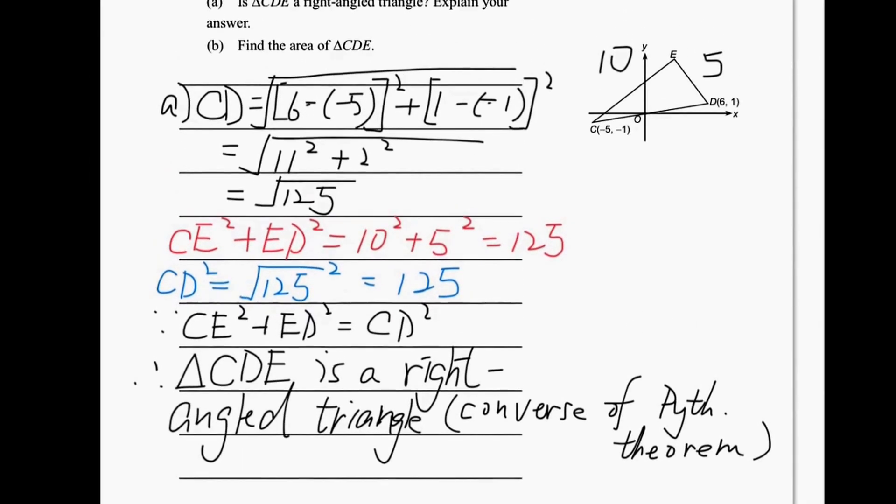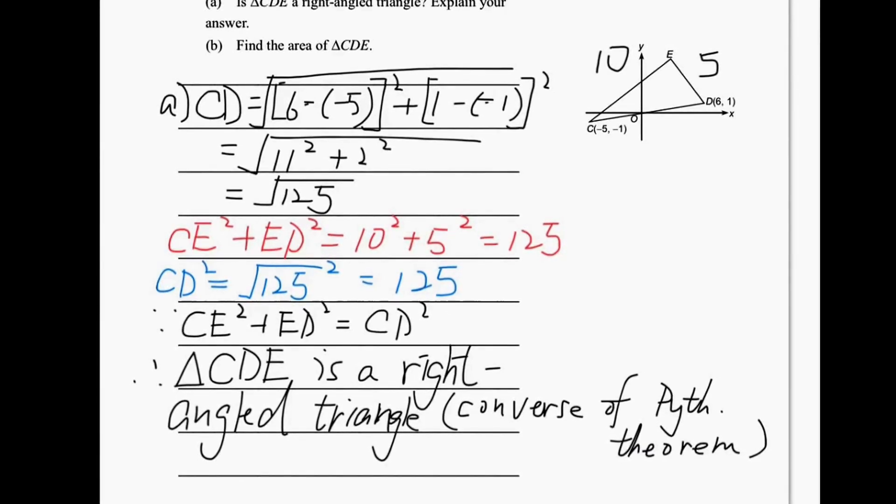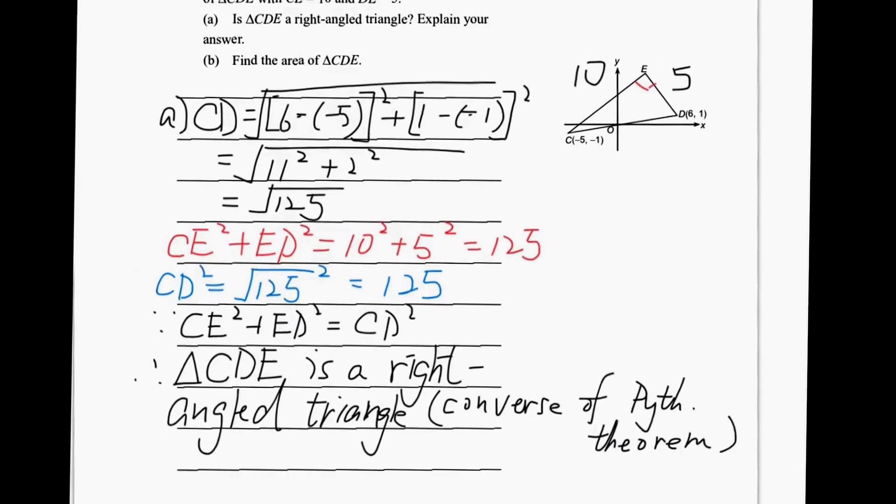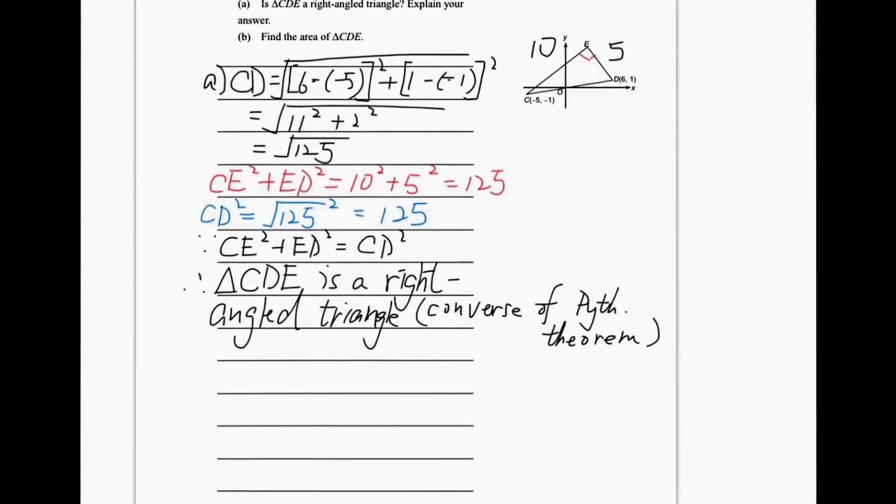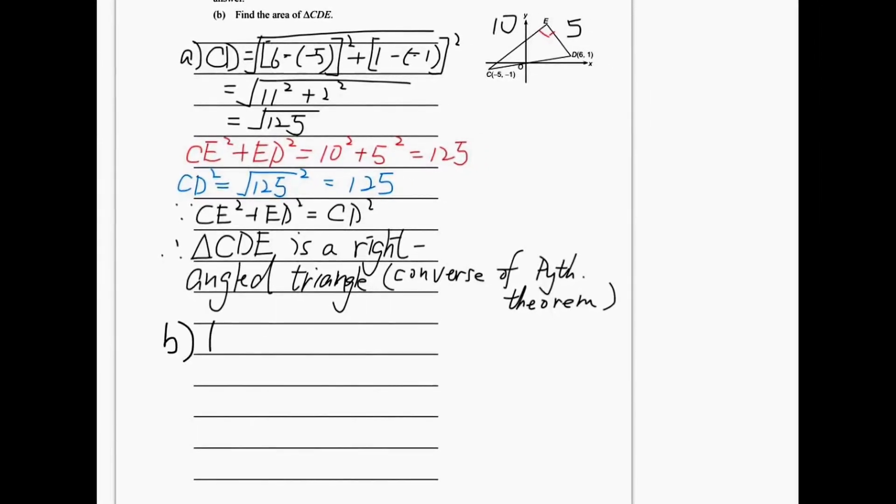Part B. Find the area of triangle CDE. Since we have already proved that triangle CED is a right-angled triangle, which means angle E is 90 degrees, the area is just simply base times height divided by 2. The area is equal to base 10 times height 5 divided by 2, and it is equal to 25. Don't forget the unit. Since this time the unit is talking about the area, the unit will be 25 square units.